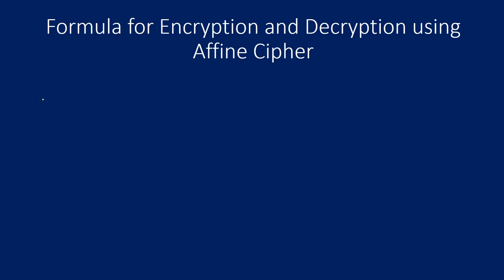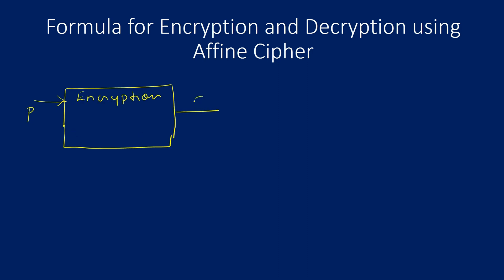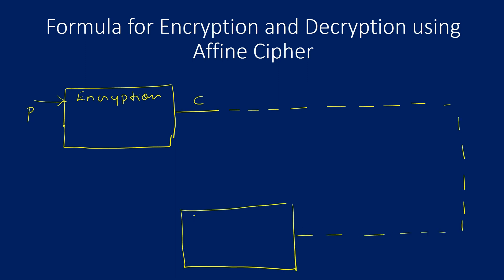An Affine cipher is basically a set of encryption and decryption algorithms. An encryption algorithm converts plaintext into ciphertext such that the ciphertext is a meaningless, unreadable message for any attacker.